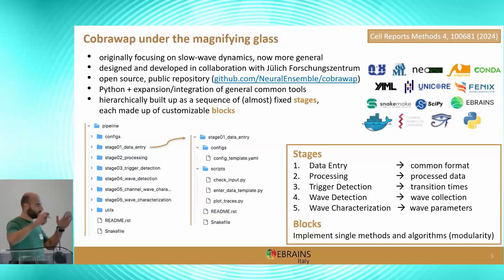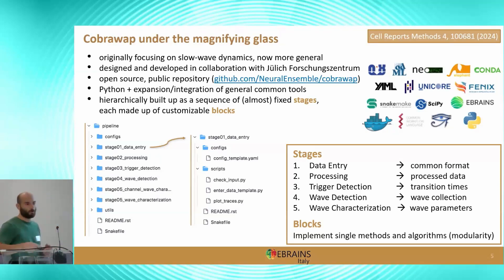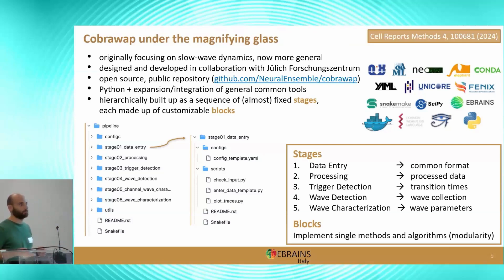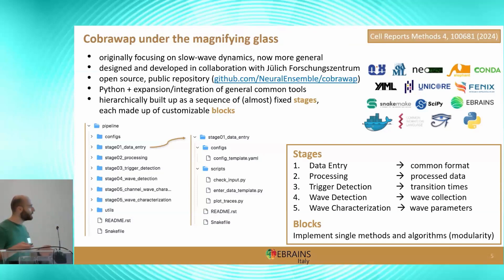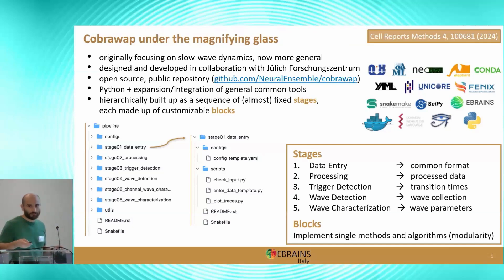Every one of these boxes — data entry, processing and so on — is very flexible, so you can put what you need inside. For example, if you're using electrophysiological data, you may want to apply some de-trending, some frequency filtering. While if you're looking at imaging data, you may want to use completely different tools. You want to be as flexible as possible to match all these experimental cases.